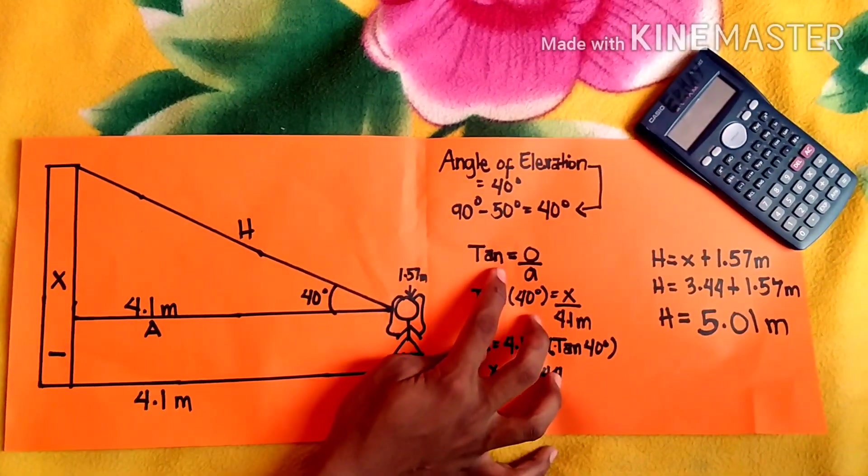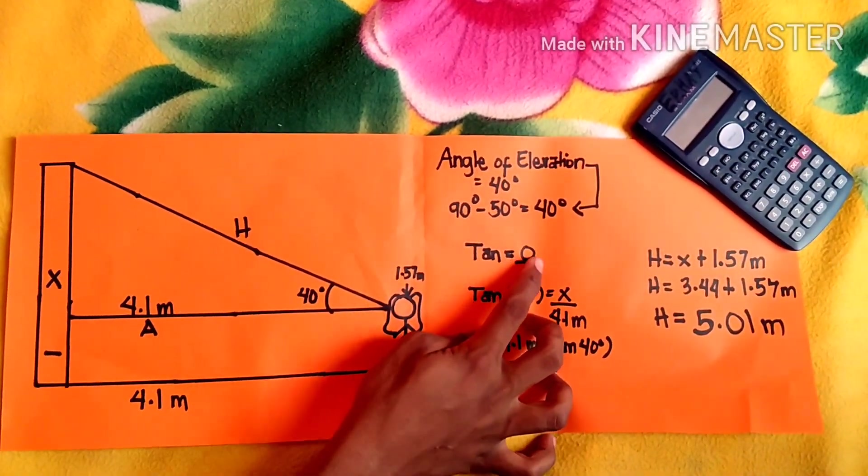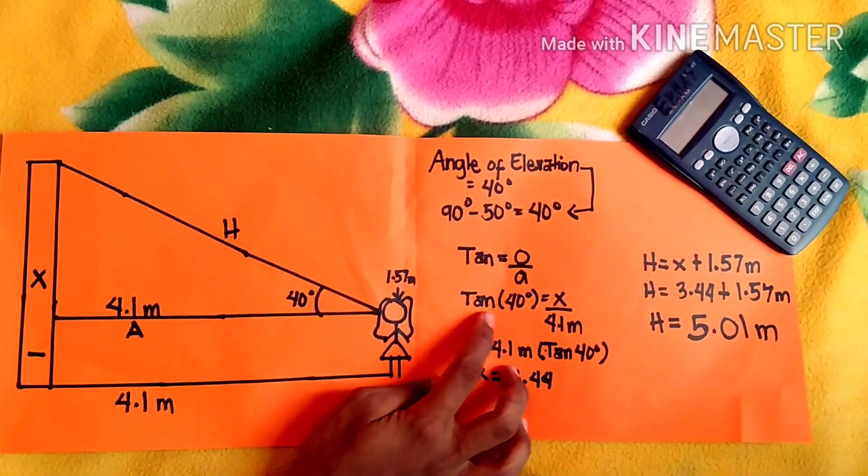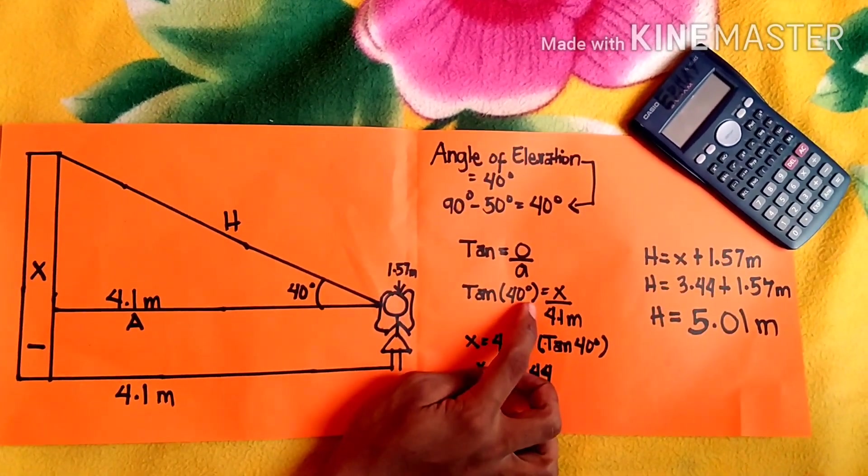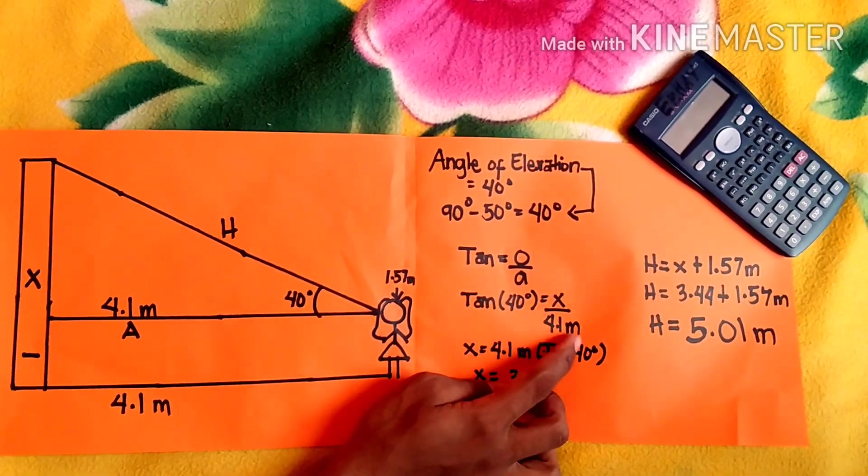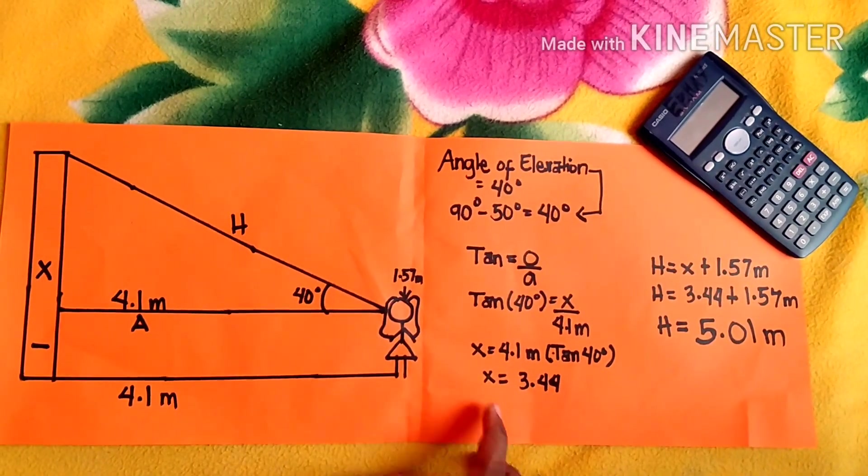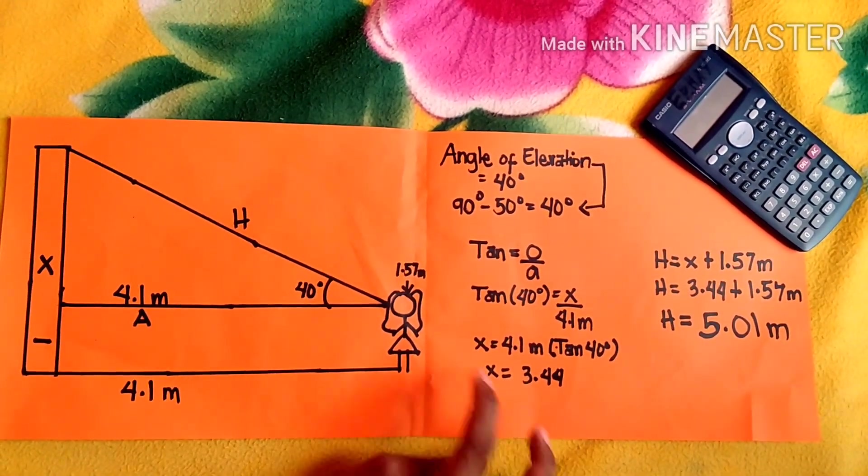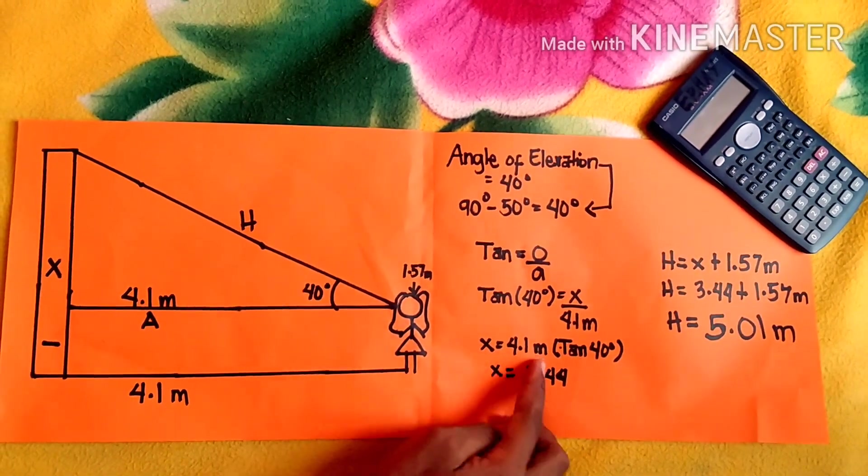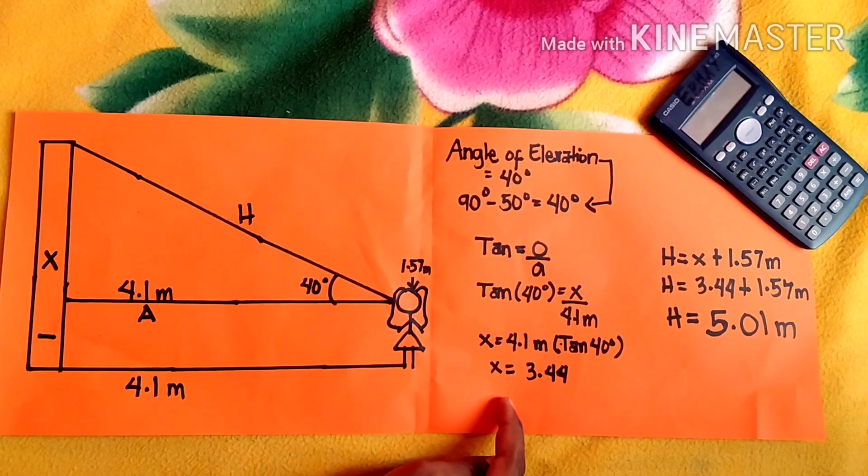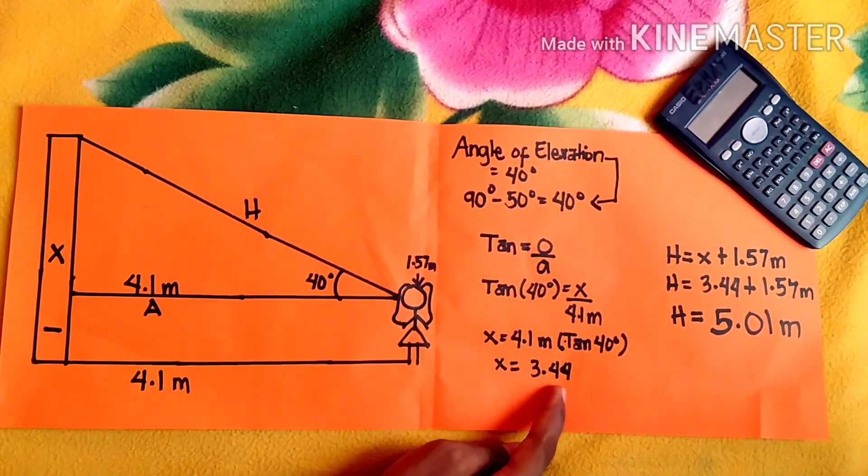We will use the formula: tan equals opposite divided by adjacent. Tan 40 degrees, which is our angle of elevation, equals x divided by 4.1 meters, which is the distance of the observer to the base of the building. X equals 4.1 meters times tan 40 degrees. We have an answer of x equals 3.44.